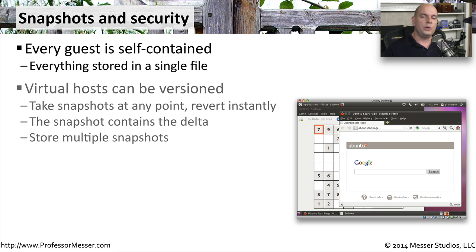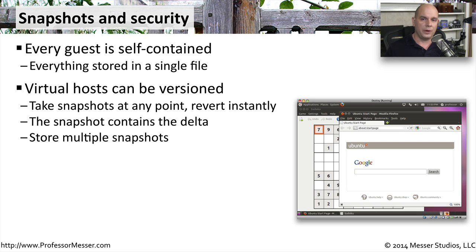Since it is a single file, you could do versioning of this system. You might take snapshots occasionally of your operating system, and if you happen to install a bad file or get infected with malware, you can simply roll back to a previous snapshot. Your system is then in the same form that it was when you took that snapshot originally. You can store multiple snapshots, so every time you want to make a major change to your system, you simply take a snapshot and it's very easy to roll back to a previous version.